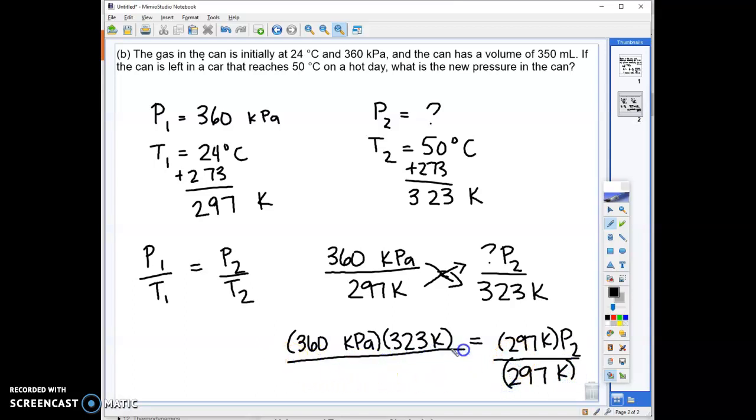So in order to solve for P2, I need to divide both sides by 297 K. So those will cancel, and then my units of Kelvin will cancel here. I'm left with units of kPa, which I know are units of pressure, and that's what I'm looking for. So now it's just a matter of plugging this in the calculator and solving. So I'll say 360 times 323 equals, divided by 297 equals, and I'll come over here, P2, and I get 391.52. Of course, that's going to be kilopascals as my unit.